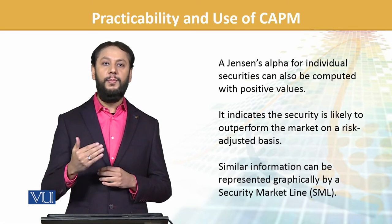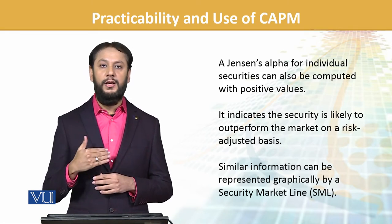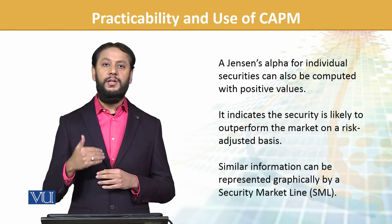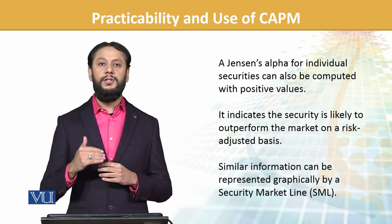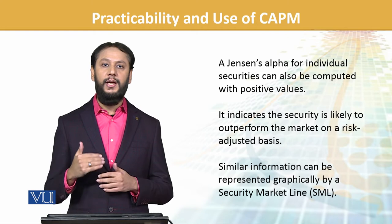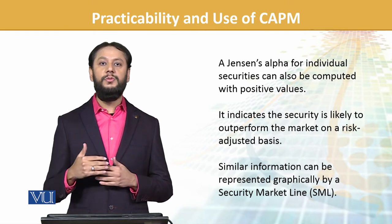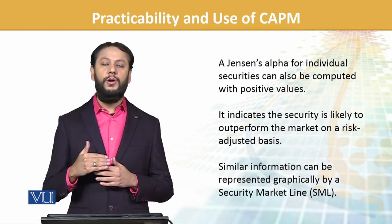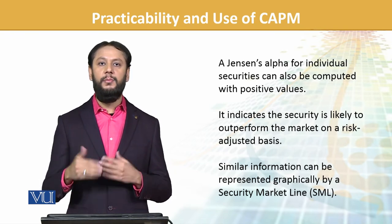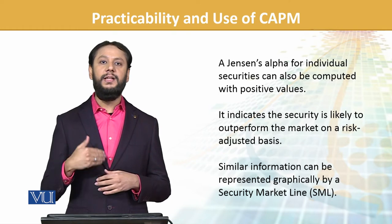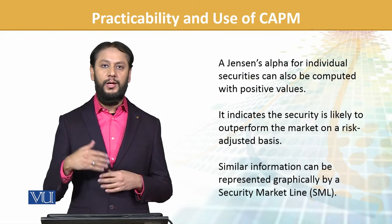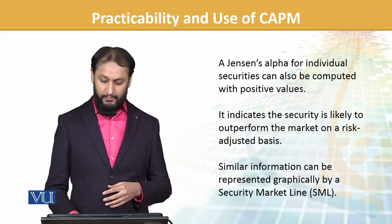Similar information can be represented through the SML (Security Market Line). The SML line reflects the concept of undervalued and overvalued securities — we can see which stock is undervalued and which is overvalued based on its placement in the SML. From this, we can determine how a security will perform in the market. We can buy undervalued stocks and short overvalued ones to make better returns from the market.